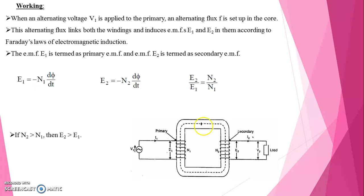From this we can write equation for EMF. E1 is equal to minus N1 d phi by dt. Here E1 is EMF induced in primary coil, N1 is number of turns in primary coil, d phi by dt is change of flux with respect to time. E2 is EMF induced in secondary coil, N2 is number of turns in secondary coil. E2 is equal to minus N2 d phi by dt.